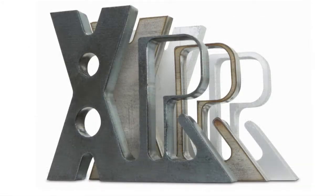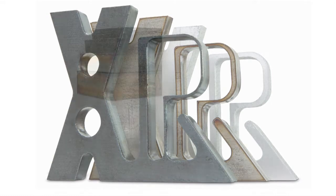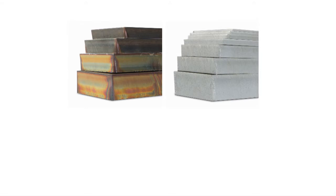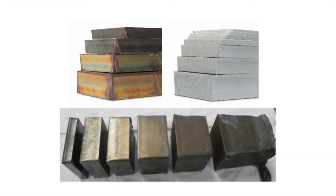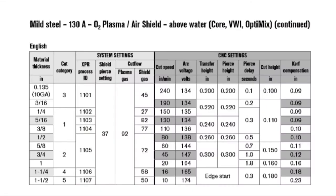Hypertherm's cut charts are designed to give the best quality with minimal dross. Every cutting process contains a range of thicknesses in which process engineers work to optimize cutting performance. Generally, the middle of the chart is the most optimized range and is called the process core thickness, or PCT. Thicknesses greater or less than the PCT can have varied results relative to cut quality, cut speed, and piercing capability.